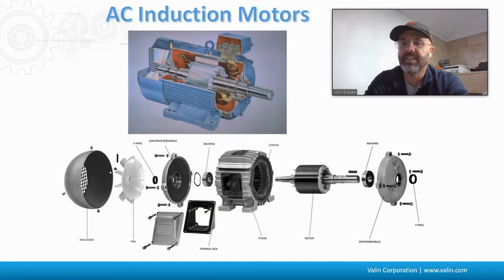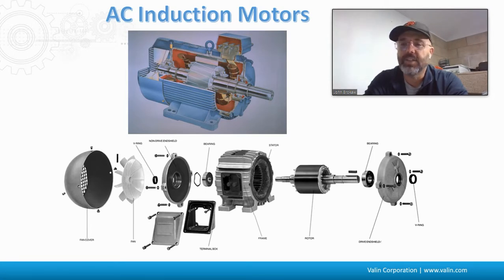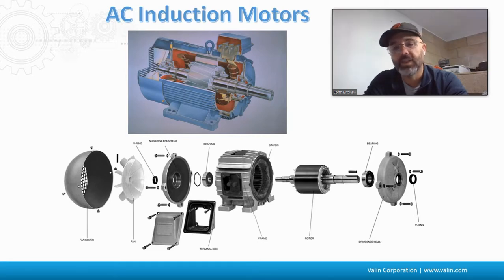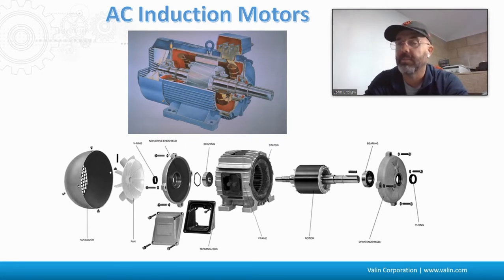Here we have the guts of an AC induction motor. You can see this is a classic induction motor — you don't see any brushes or anything tying to it. You have that rotor assembly there in the middle that's tied to the shaft going through it. The only wearing component on a typical AC induction motor are the bearings, which you can see at the ends of the motor.